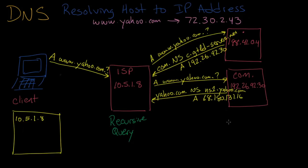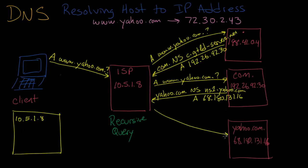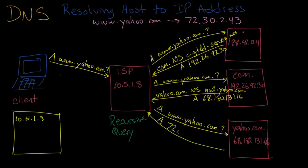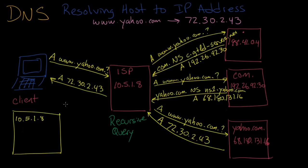The yahoo.com name server is ns1.yahoo.com and its address is 68.180.131.16. Your ISP reissues the request again, this time to the yahoo.com name server, asking the same question: what is the address for www.yahoo.com? And this time the DNS server has an answer — it says the address is 72.30.2.43. Now your ISP has the answer and it can return that response back to you, and your computer is now able to contact the www.yahoo.com web server in order to deliver a web page to you.